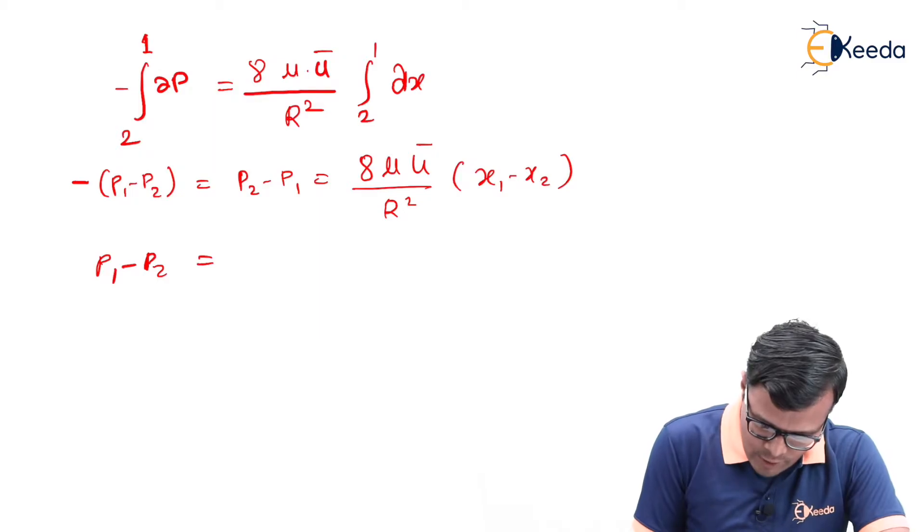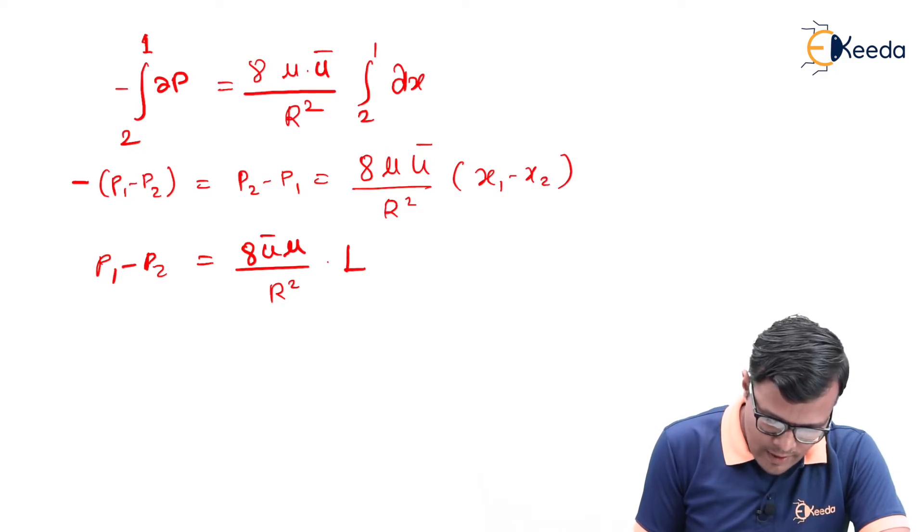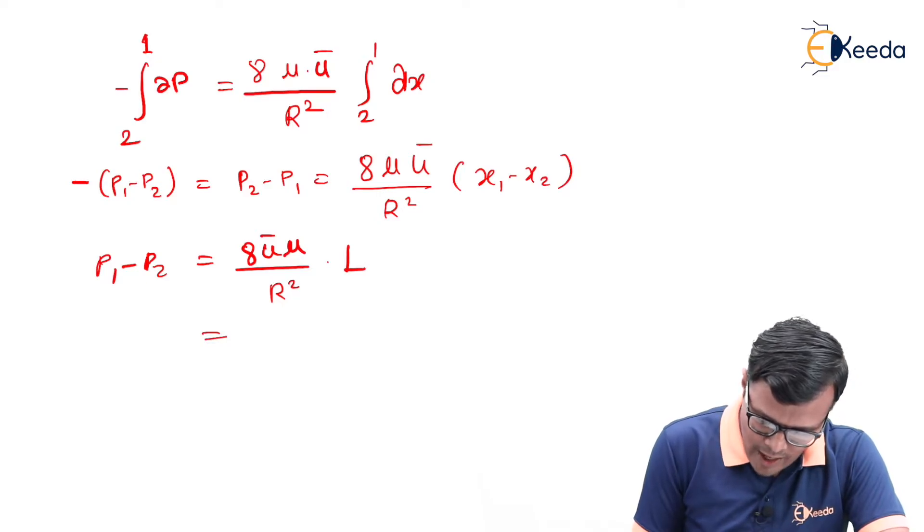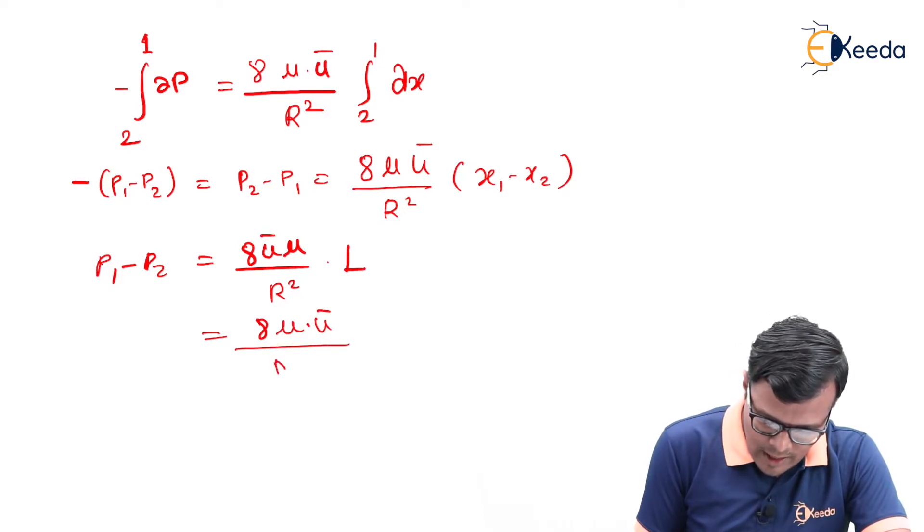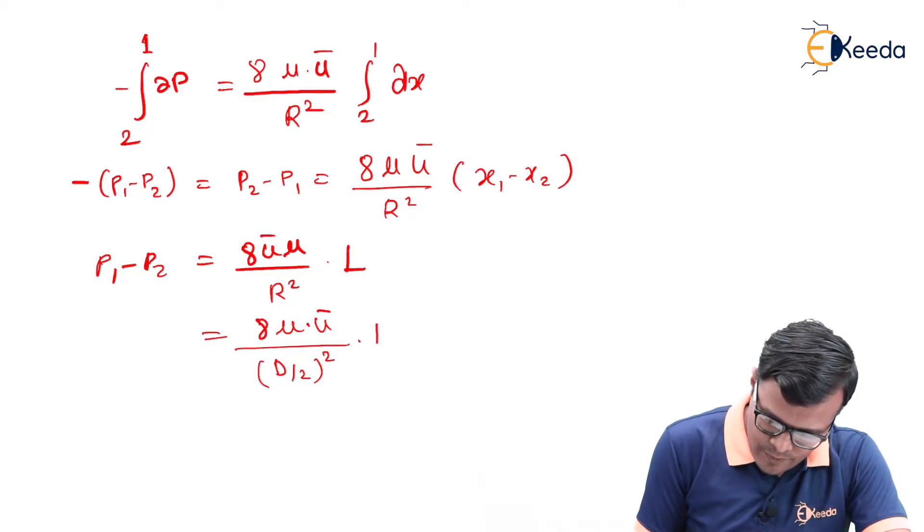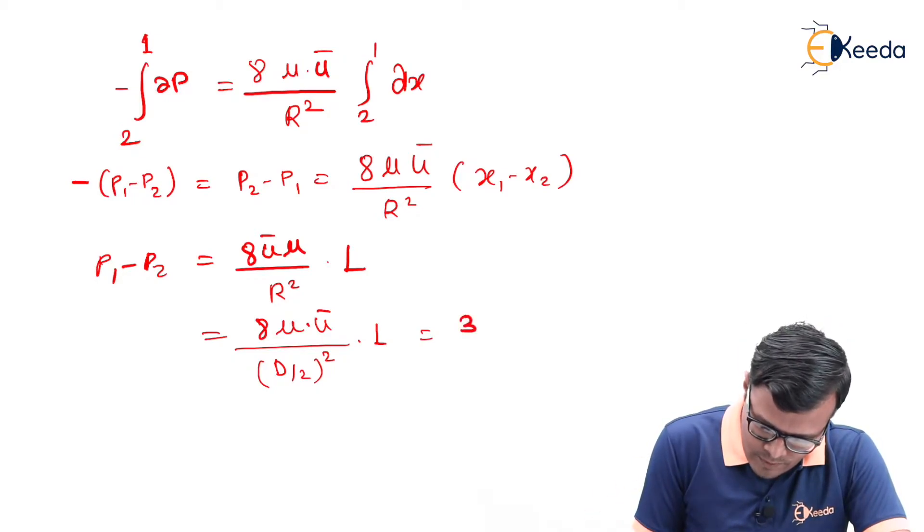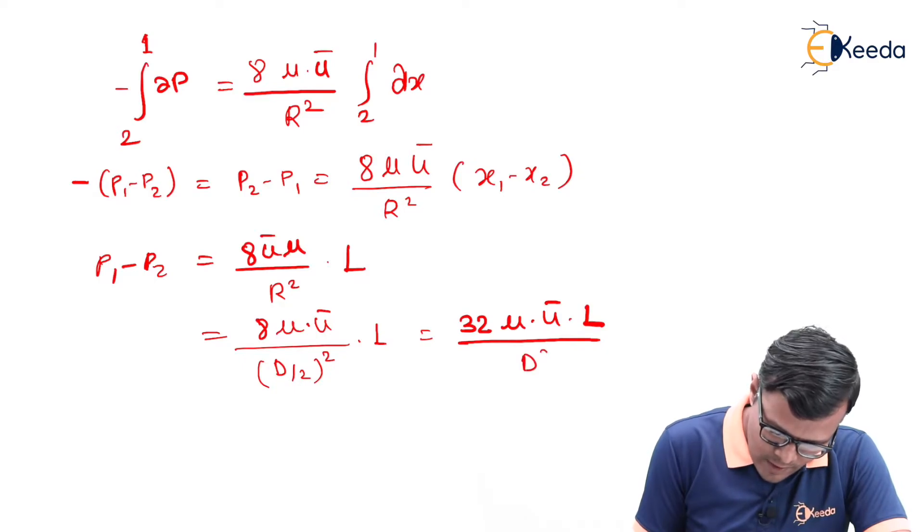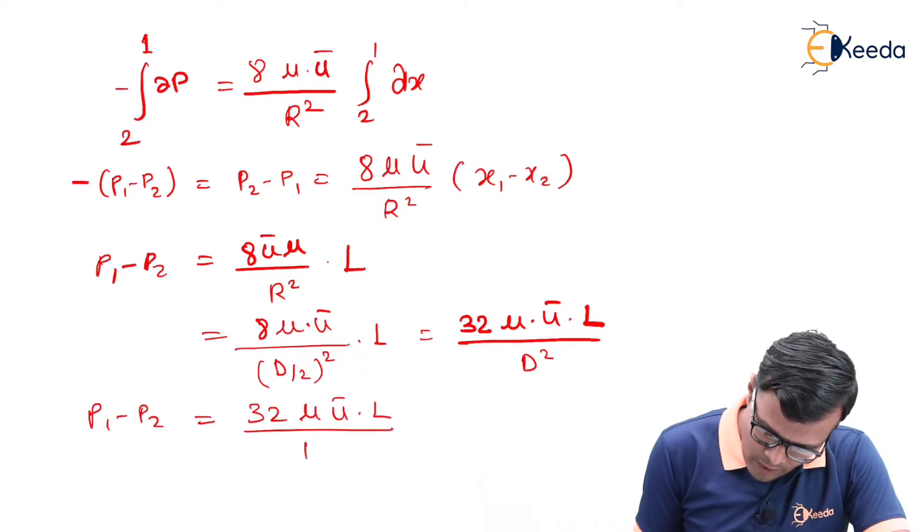P1 minus P2 is equal to 8 u bar mu upon R square into this capital L. This R square can be converted into diameter relation as 8 mu into u bar upon this radius, which is nothing but the diameter upon 2, bracket square, into L. This 8 multiplied by 2 square becomes 4, so 8 multiplied by 4 becomes 32 mu into u bar into L upon d square.